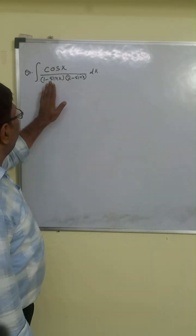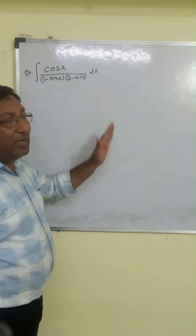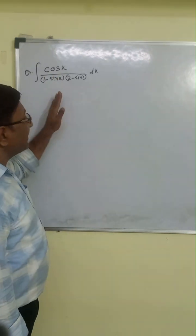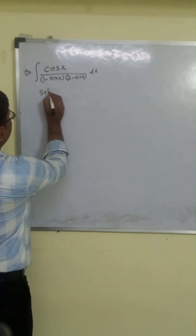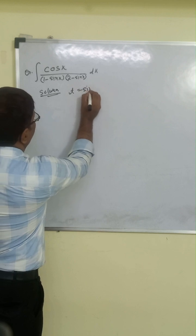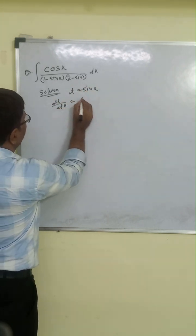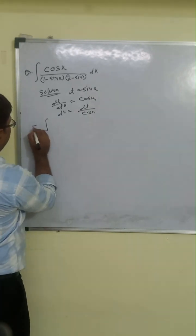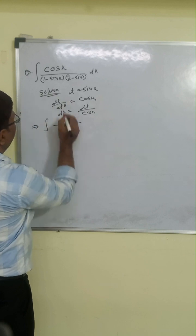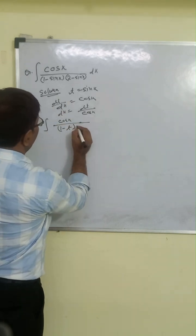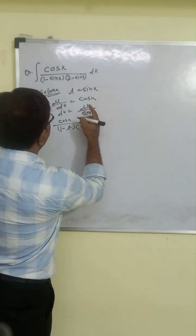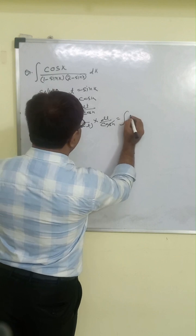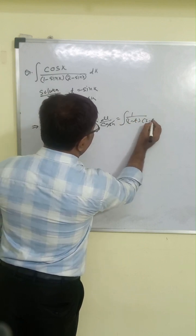Next question: find integration of cos x upon 1 minus sin x into 2 minus sin x. For this type of question, the derivative of sin x is cos x. So just put t equal to sin x — then dt/dx equals cos x, so dx equals dt/cos x. We get integration of cos x over (1-t)(2-t) times dt/cos x, and cos x cancels, giving integration of 1 upon (1-t)(2-t) dt. This is the first equation.